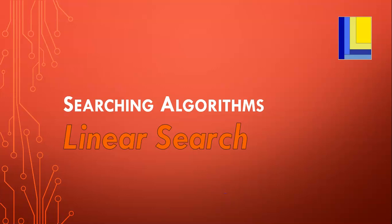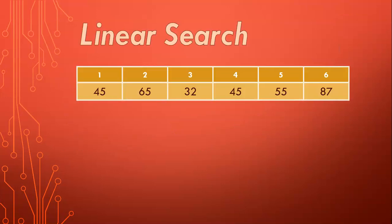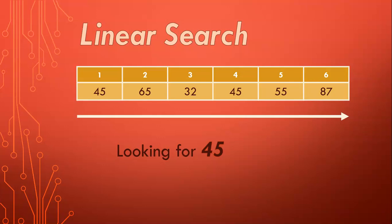In this lesson, we're going to be looking at searching algorithms, specifically the linear search — a way of going through an array and trying to find a particular value. We'll take the scenario where we have an array with six values, and we want to handle duplicate values. There you can see the 45. If we were looking for that 45, we want to go from the start of the array right to the end, looking at every single value, because we want to find all possible occurrences.